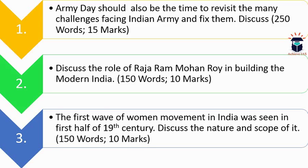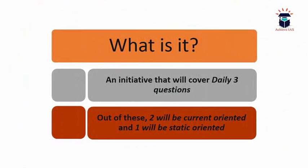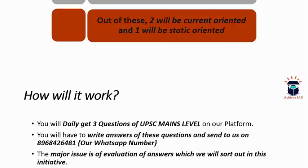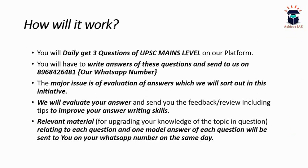For those watching for the first time — this initiative covers daily three questions, two from the current portion and one from the static part. The static topic is told to you one day in advance. This week we will only cover Modern India. The daily test comprises three questions, you write the answers and send them to us on our number: 8968-426481.